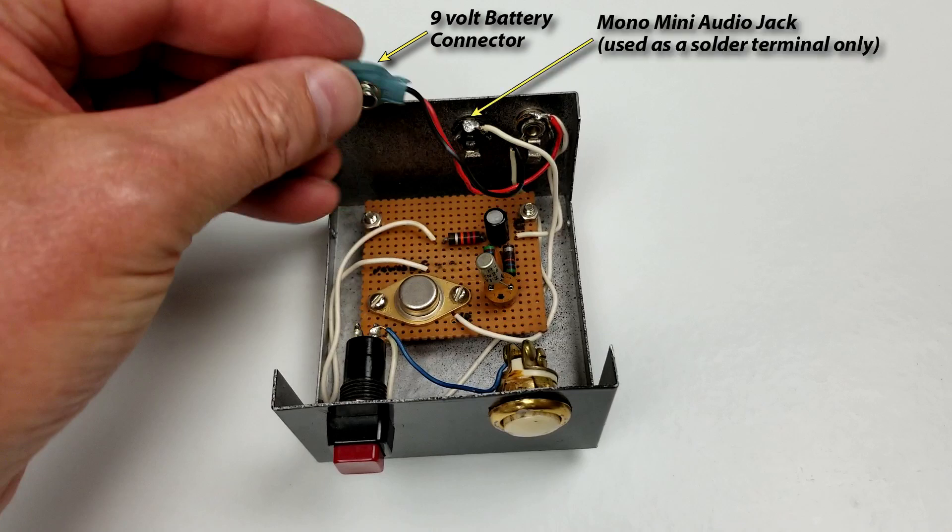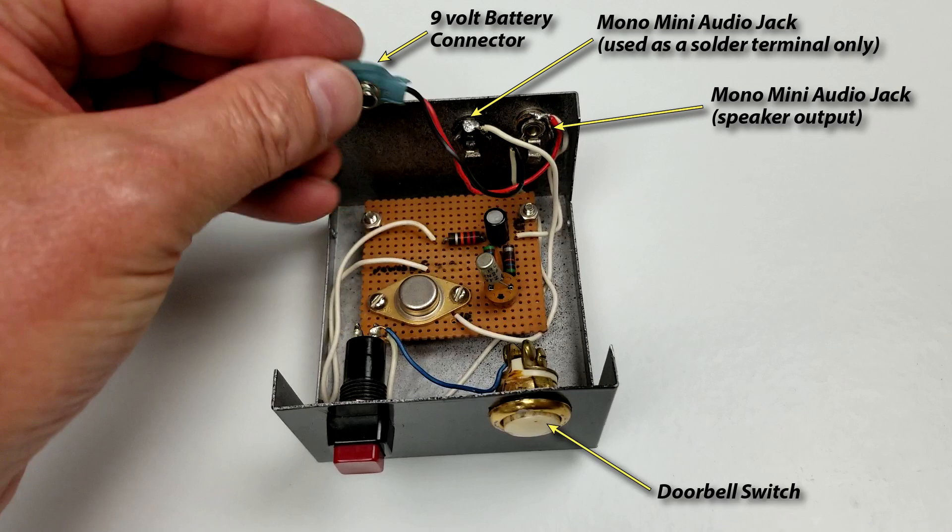There are two mono mini jacks, but one just acts as a solder terminal. The other is audio out because the small speakers I had at the time all sounded terrible inside the case. The doorbell controls the siren pitch up and down, and the all-important power switch does what it's supposed to do, though a toggle switch with clear on and off positions would have been better.